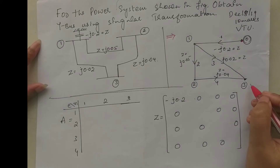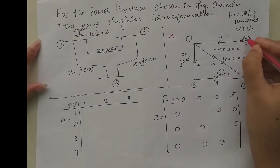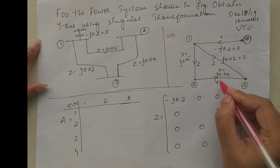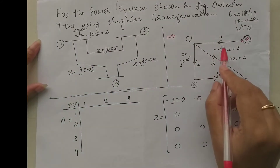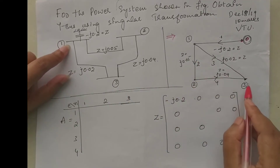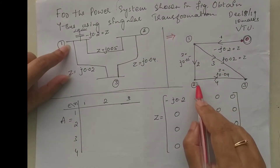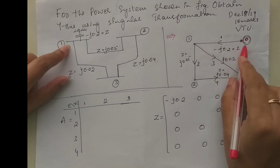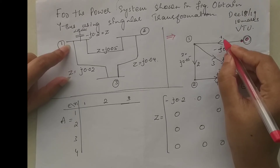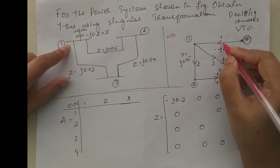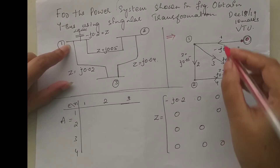When directions are not mentioned, you have to assume the direction of each element and also assume element numbers. First, draw the oriented graph by denoting nodes 1, 2, 3, and the grounded node as 0. I have taken element 1 from 0 to 1, element 2 between 1 and 2, element 3 between 1 and 3, element 4 between 2 and 3. You can take left side, right side, upside, or downside — you will get the same final answer, though intermediate matrices may differ.